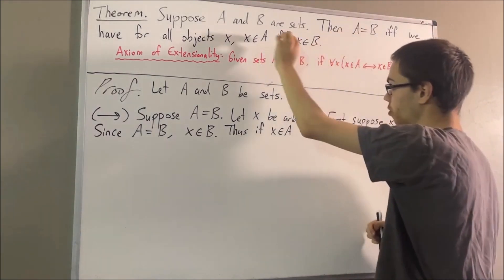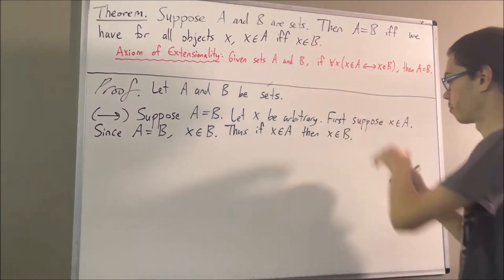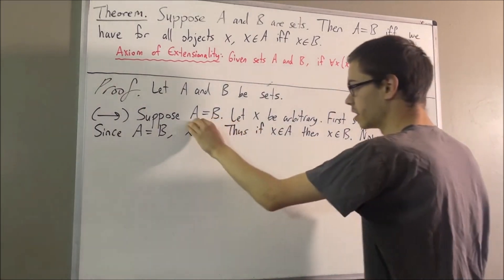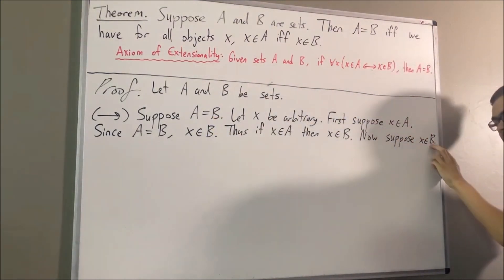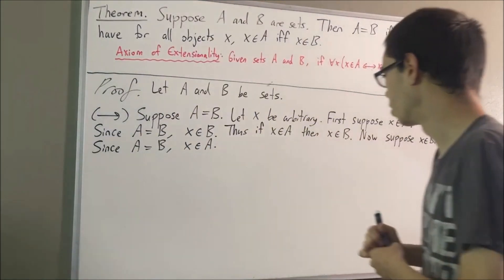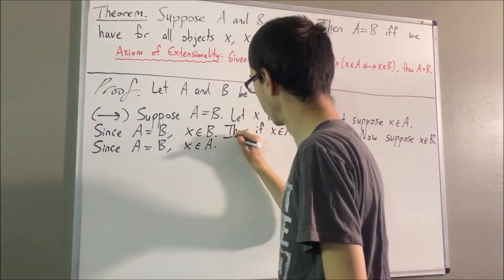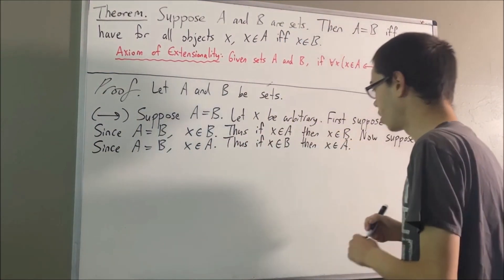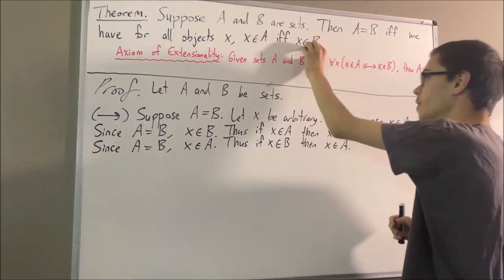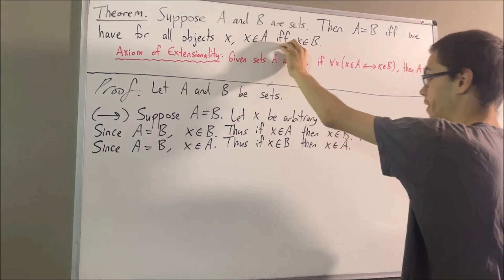Now we're going to prove the other direction: if X is an element of B, then X is an element of A. So let's suppose that X is an element of B. And again, since A is equal to B, we can take B here and substitute it for A. So we have proven if X is an element of B, then X is an element of A. Thus, we have proven X is an element of A if and only if X is an element of B.